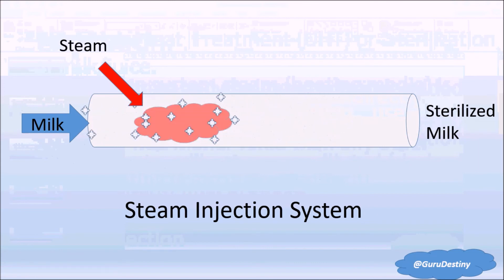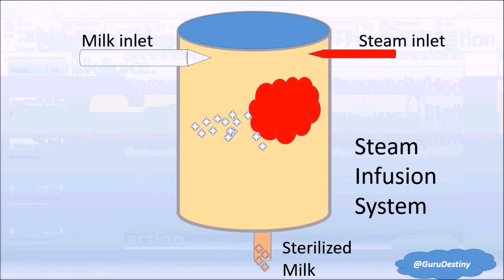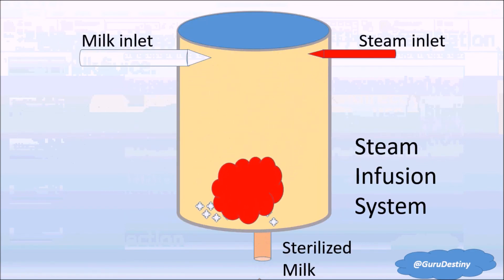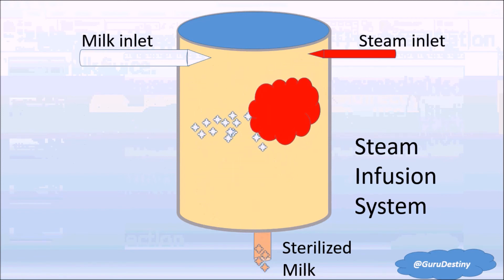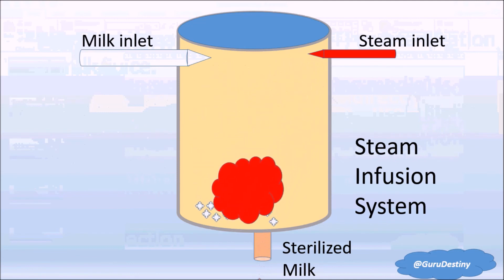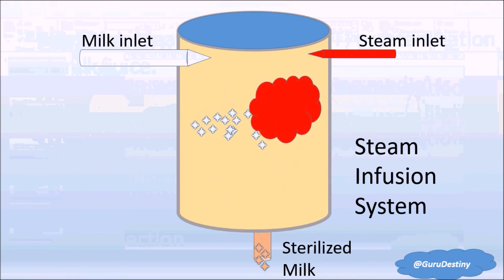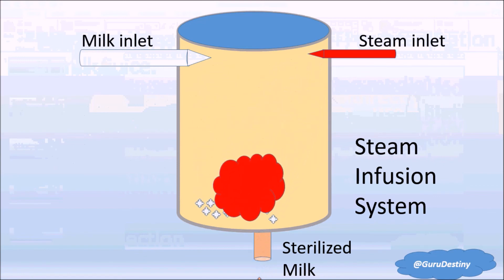In the steam infusion system, the product is sprayed into a large chamber, and so is the steam in the same chamber. The product absorbs heat and water from the steam. In the next section, we remove the water and heat to cool the product. The cooled product is the final product, and with no need for refrigeration, it is packed aseptically.